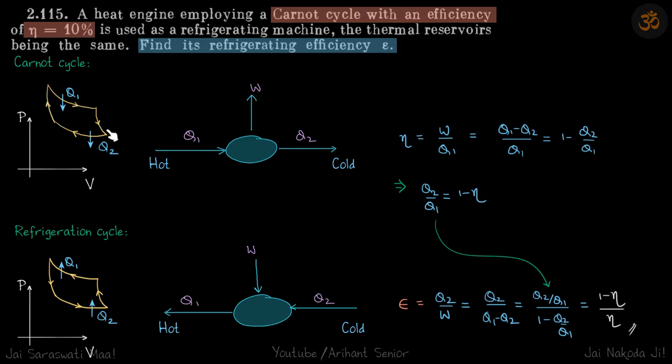In the PV graph, these two are adiabatic processes. The work done is positive, which means Q1 is also positive. Heat is taken in by the system, and here the heat is released by the system.